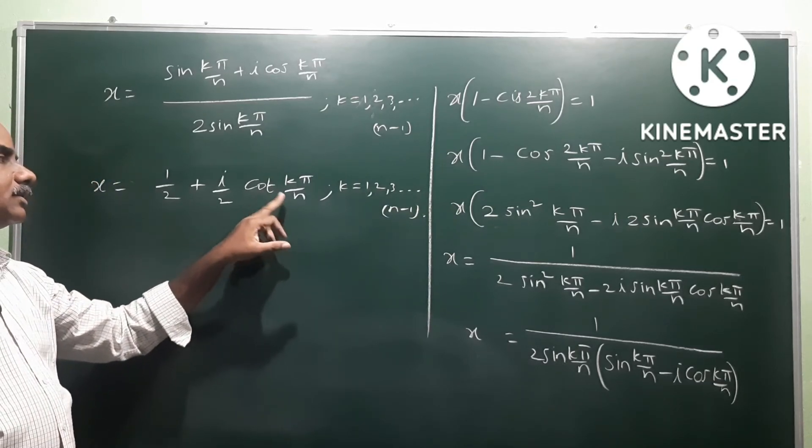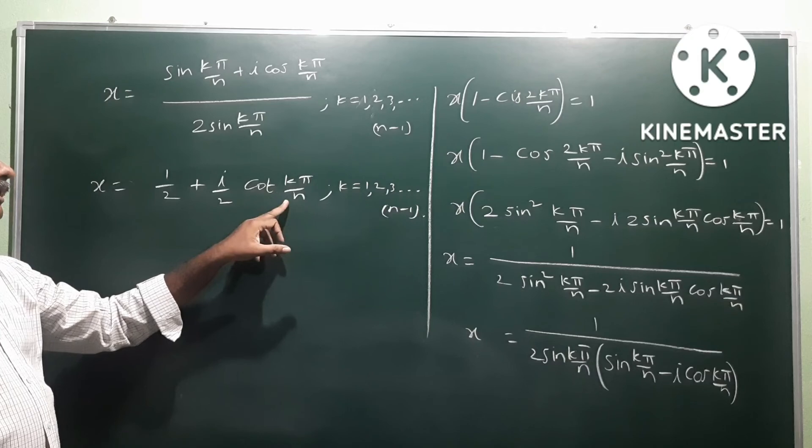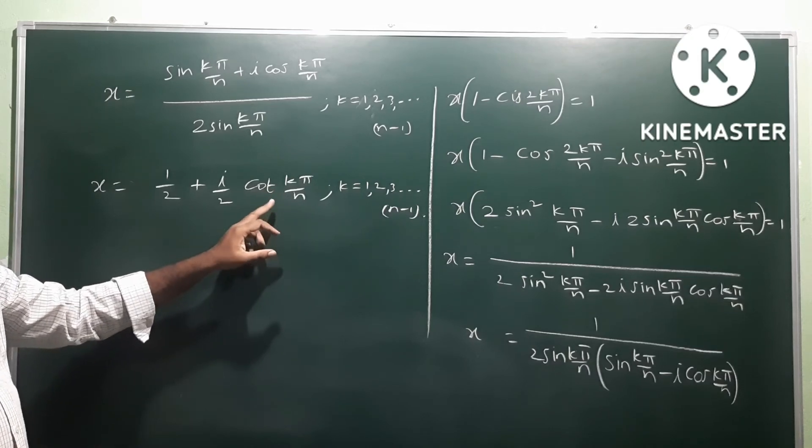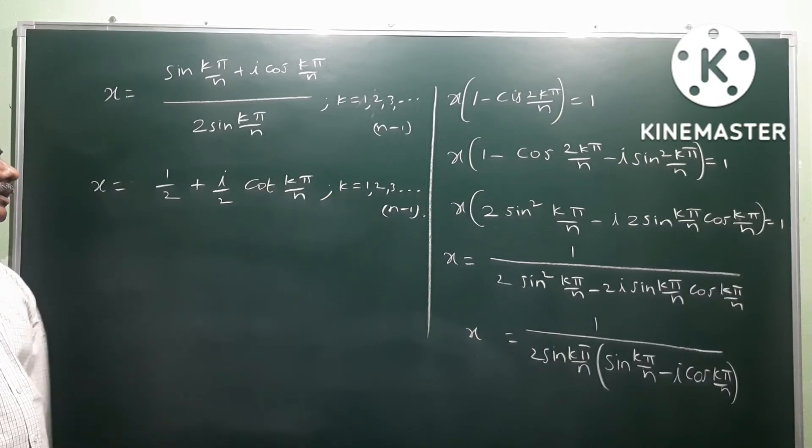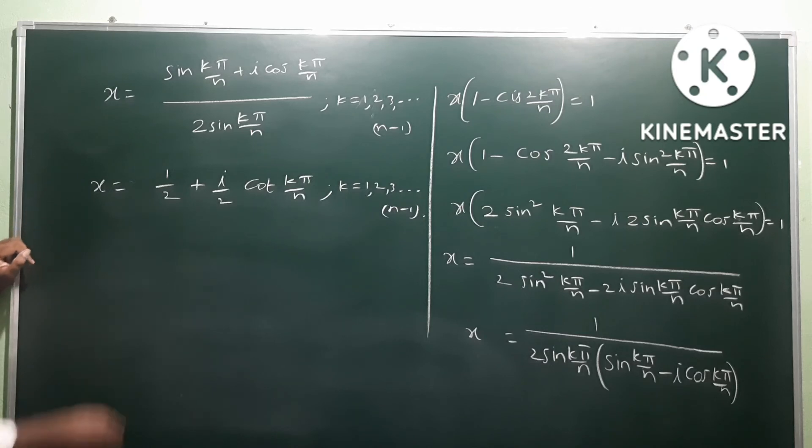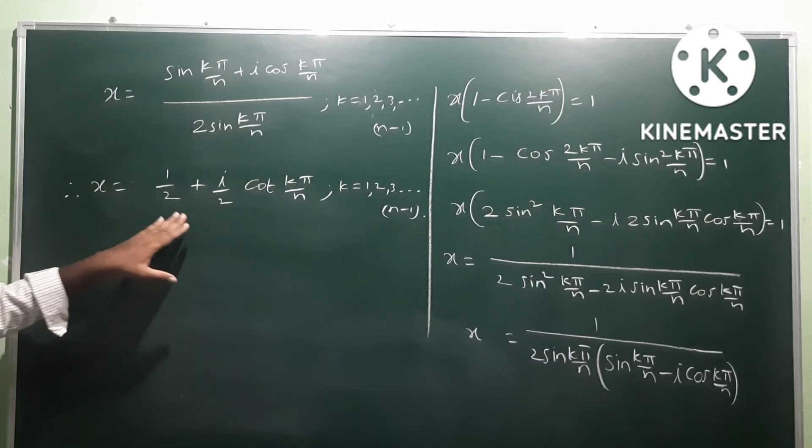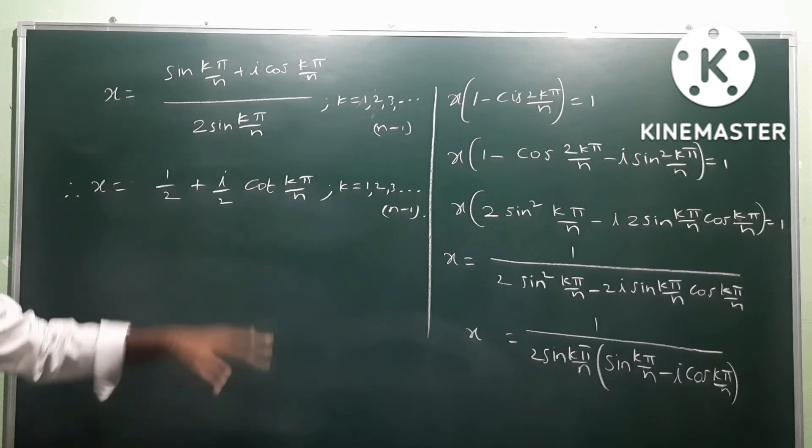Finally, this is our value: x = 1/2 + (i/2)·cot(kπ/n), where k = 1, 2, 3, and so on up to n-1.